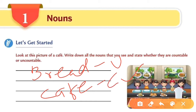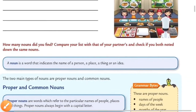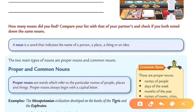How many nouns did you find? Compare your list with that of your partner and check if you both noted down the same nouns. You have to make a list of countable nouns and uncountable nouns from this picture. Next, the definition of noun: a noun is a word that indicates the name of a person, place, thing, or an idea.